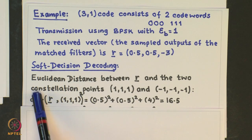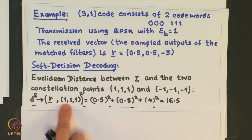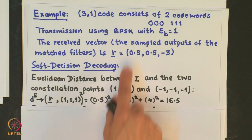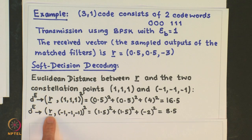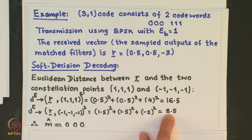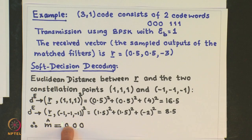We compute the squared Euclidean distance between the received vector r and signal vector (1,1,1), obtaining a certain value. Similarly, we compute the squared distance to signal vector (−1,−1,−1). Since the distance to (−1,−1,−1) is minimum, we decide in favor of that signal vector — that is, we decide in favor of codeword 000.